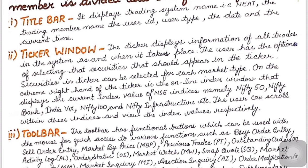On the right side of the ticker is the online index window, where many indices appear — such as Nifty 50, Nifty Bank, India VIX, Nifty 100, Nifty Infrastructure, etc. The user can scroll through all the indices and watch them respectively.